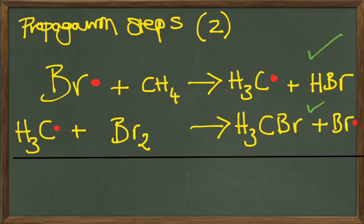The alkyl radical then goes on to react with a new molecule of bromine and makes our bromomethane and reforms the bromine radical.